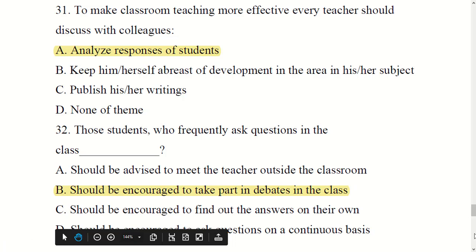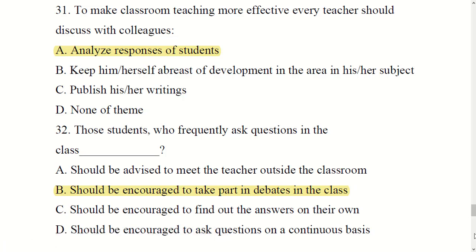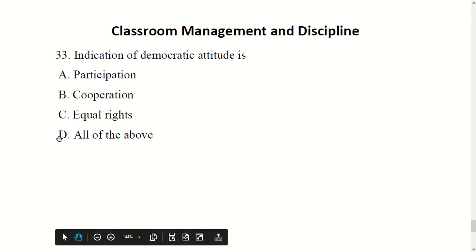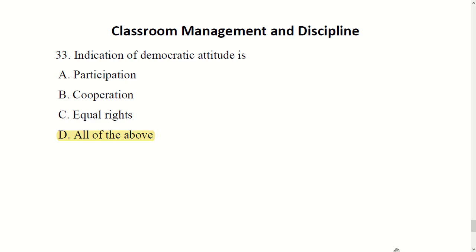Indication of a democratic attitude is participation, cooperation, equal rights — all of the above. Democracy includes all of the above. Dear students, that's all about classroom management and discipline. See you in the next video.